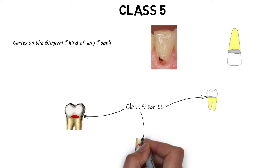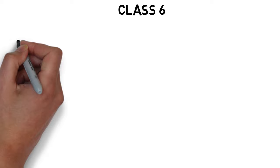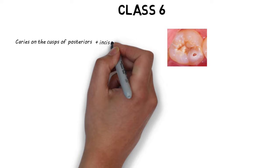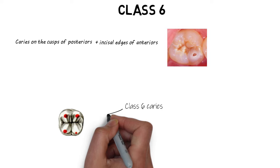Class 6 basically includes caries occurring on the cusps of posterior teeth — molars and premolars — as well as the cusps of canines. It also includes lesions on the wear defects of the incisal edges of the anterior teeth. So caries occurring on cusp tips and on the incisal edges is termed Class 6.